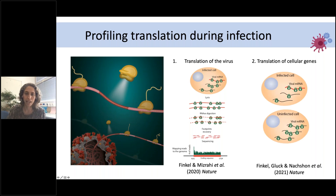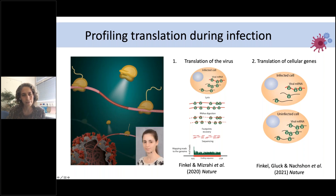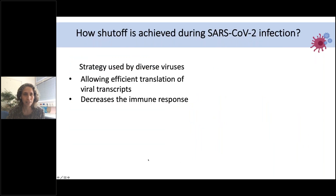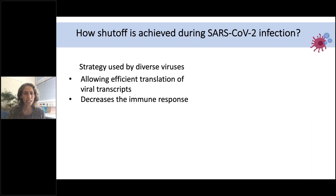The second part of the story is using ribosome profiling to map how SARS-CoV-2 manipulates host translation during viral infection. This was a huge team effort with the star being a graduate student named Yara Rufayzen. The question we wanted to answer: how is host shutoff achieved during SARS-CoV-2 infection? Host shutoff is a common strategy used by diverse viruses with two potential advantages. First, by shutting off host protein synthesis, the virus potentially allows more efficient translation of viral transcripts. Second, and more important, host shutoff prevents translation of immune genes, decreasing the cells' ability to mount an efficient antiviral immune response.